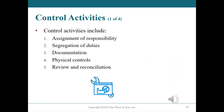This assessment is also heavily influenced by the size and nature of the company. We will review five control activities that apply to most companies: one, assignment of responsibility; two, segregation of duties; three, documentation; four, physical controls; and five, review and reconciliations.